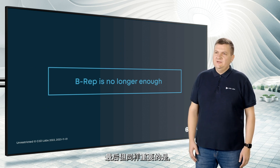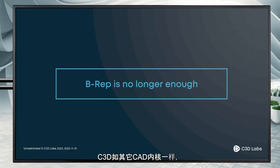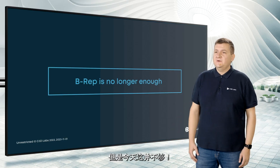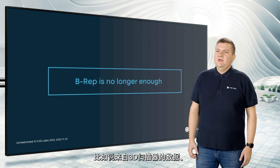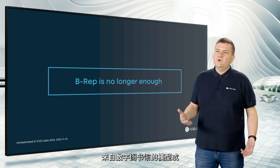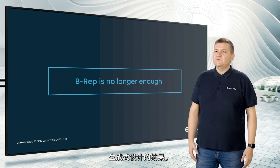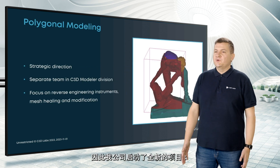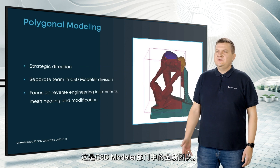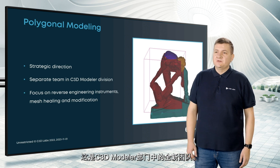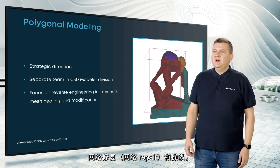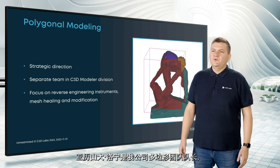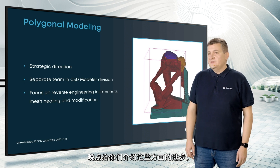One last thing, and not least: C3D, like all other CAD kernels, uses BRep as its main geometry representation. But today it's not enough. Many models come to designers in polygonal formats — in meshes. It can be data from 3D scanners, models from online libraries, or results of generative design. That's why we started a new project: Polygonal Kernel. This is a new team in the C3D Modeler division. Our first focus is on reverse engineering instruments, mesh healing and modification. Alexander Lonin, who is our Polygonal team leader, will tell you more details later.